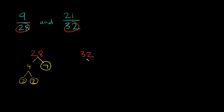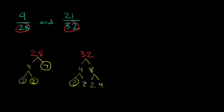Now let's do the same thing with 32. What two numbers can I multiply together to get 32? Here I'm going to use 4 times 8. Do we have any prime numbers? No — 4 and 8 are both composite numbers, so we can keep breaking both of these down. So 4 I can break down into 2 times 2, and 8 I can break down into 2 times 4. Now all these 2's are prime. But 4, we can keep breaking that down again into 2 times 2, and 2's are prime, so we circle those.